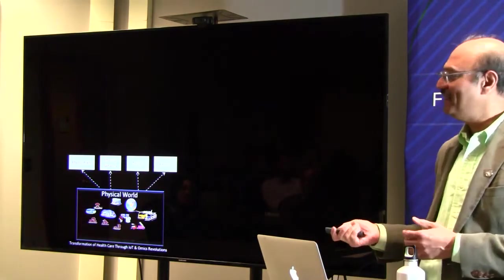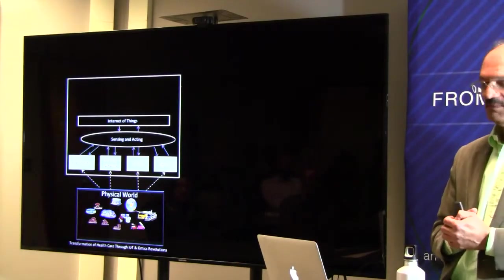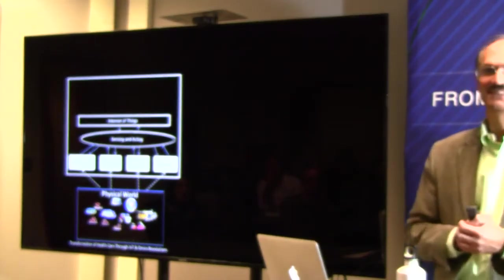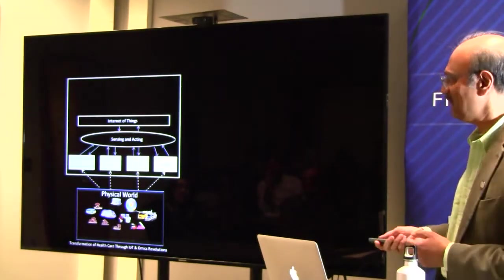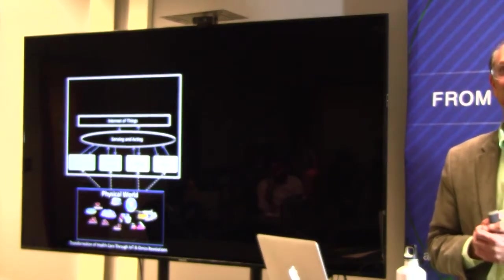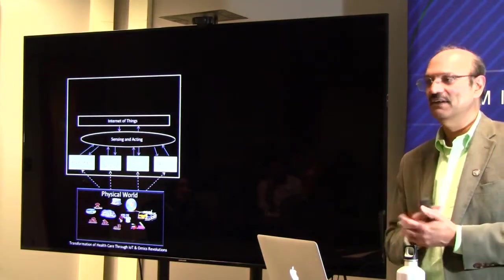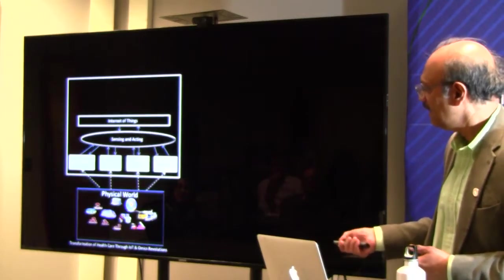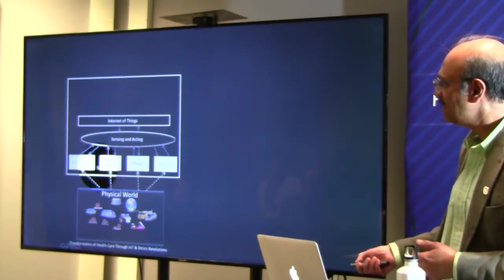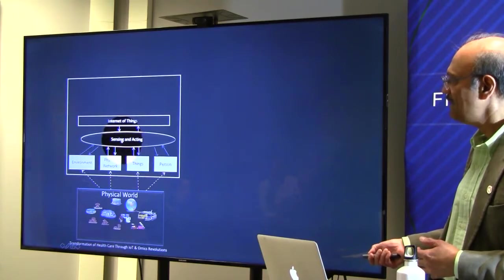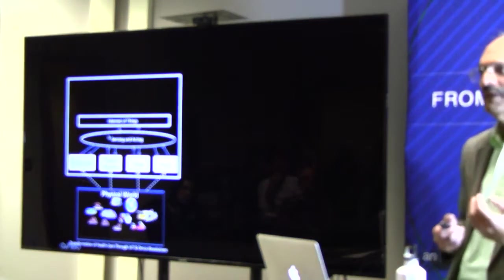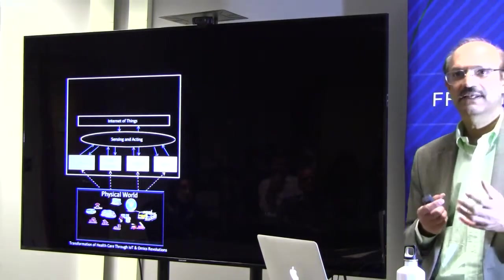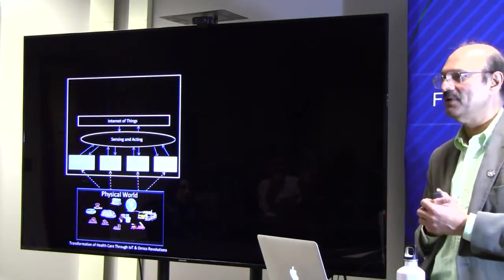The Internet of Things essentially works as follows: you have this physical world — the environment, physical networks, things, and people — and there's this whole notion of sensing and acting. Information is coming from the environment, you're sensing it, and then you're doing some action based on whatever you're sensing. That's generally what we call the Internet of Things, because everything is connected over the Internet.